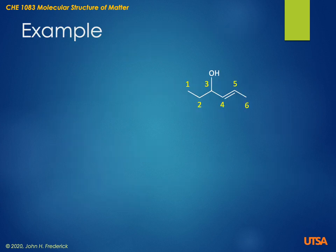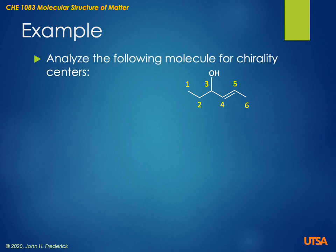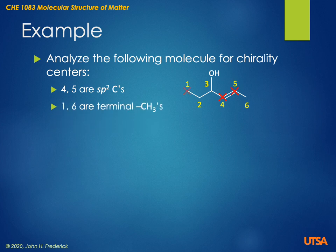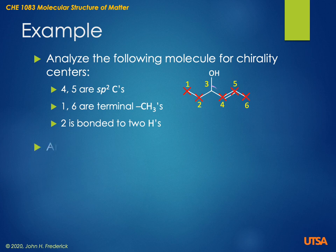Here's an example — a bond line diagram similar to the last one we looked at. We're going to find whether or not it has a chirality center. Carbons four and five are sp2 carbons, that is trigonal planar carbons, so they cannot be chirality centers. One and six are terminal methyl groups — they cannot be chirality centers. Two is a CH2 group in a chain, so it cannot be a chirality center either. This leaves only one possibility, and that's carbon number three.